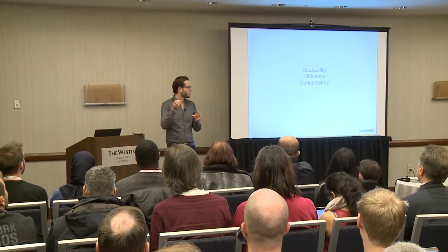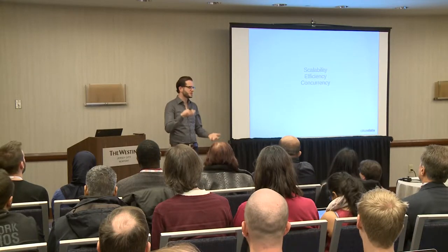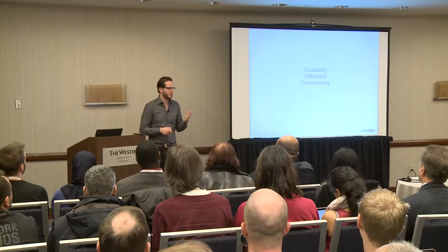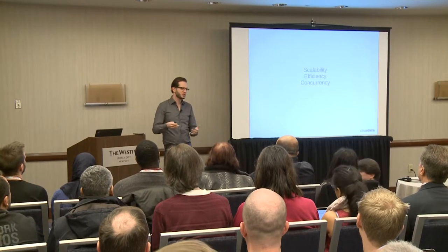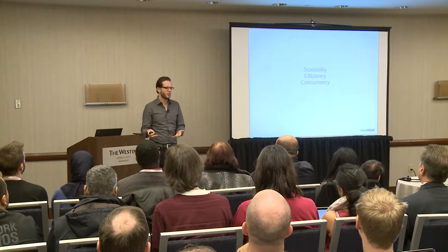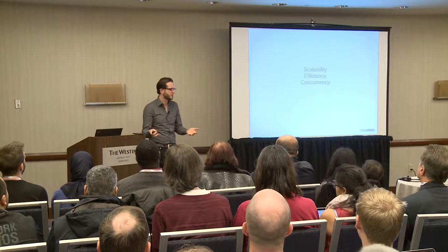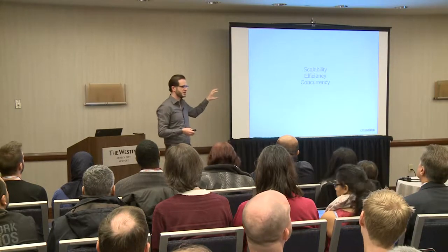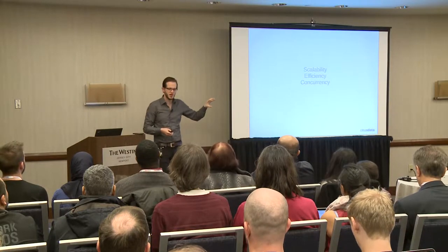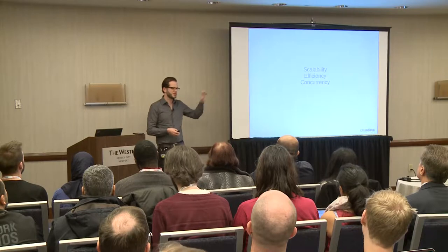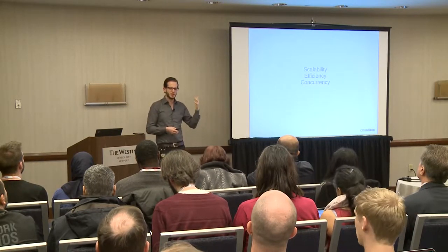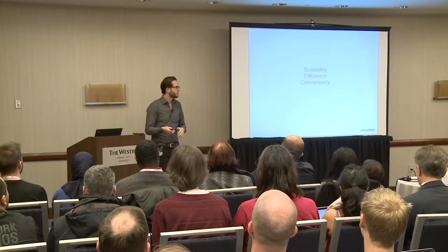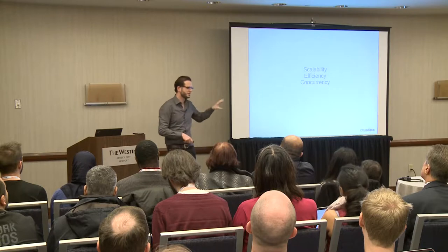Postgres performs well along some axes but not others. To define what I mean: scalability is the property that you can add more resources and do more work — more cores or more computers. I'm not really talking about scalability today. What I'm talking about is efficiency: how can we do more work with a given set of resources? If we disable parallelism and run a query on a single core, we don't use that core very efficiently. I'm also not going to talk much about concurrency. My focus today is efficiency.